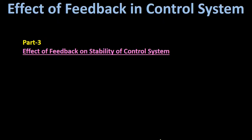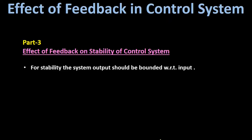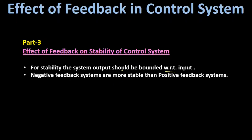Now let us see some important points related to the Effect of Feedback on Stability. First, for stability of the system, the output should be bounded with respect to input. Second, negative feedback control systems are more stable than positive feedback control systems, because in positive feedback control systems, as the feedback signal increases, the gain of the system also increases.